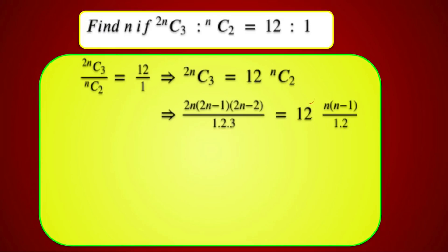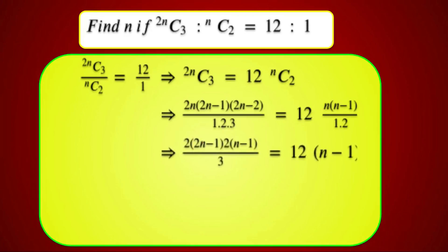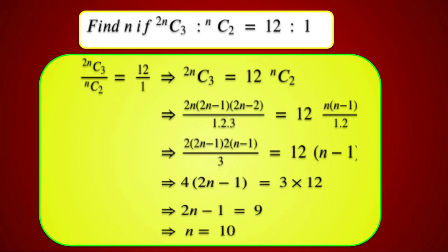Simplifying: cancel 1×2, cancel n, and factor out 2 from (2n−2) to get 2(n−1). This gives 2(2n−1)·2(n−1) divided by 3 equals 12·(n−1). Cancel (n−1) from both sides, leaving 4(2n−1) equals 36, so 2n−1 equals 9, giving n equals 10.